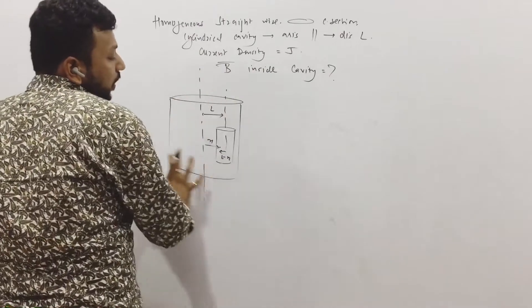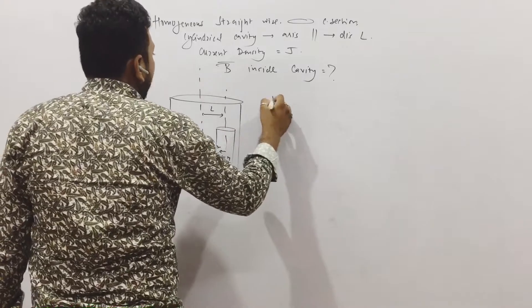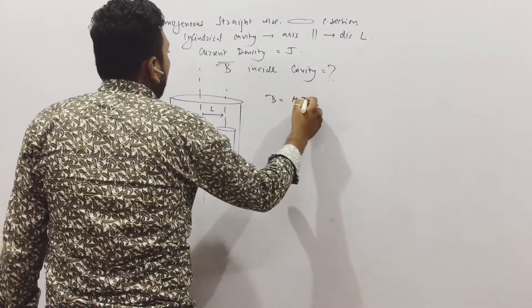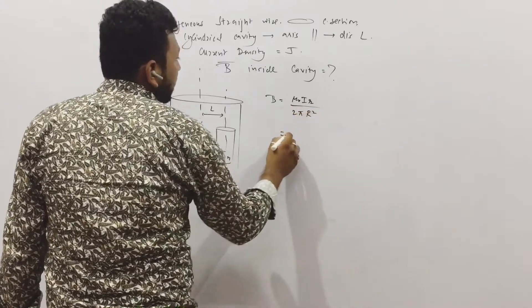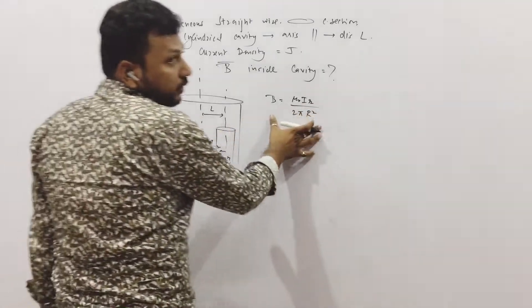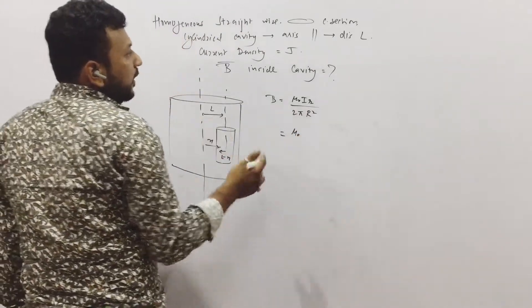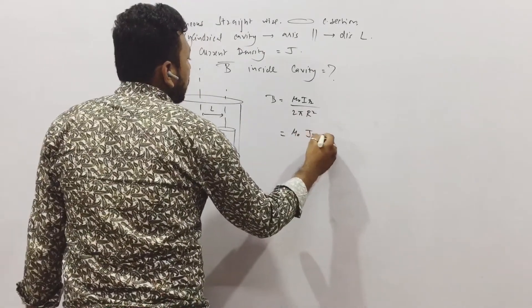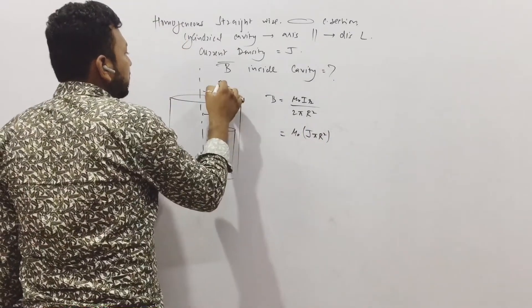If there is no cavity inside, we know the formula of magnetic field into the whole cylinder inside is mu naught IR upon 2 pi r square. That means in this case, it will be mu naught into the total current which is J into pi r square. Let us suppose the whole radius is r square.